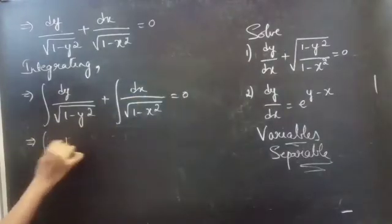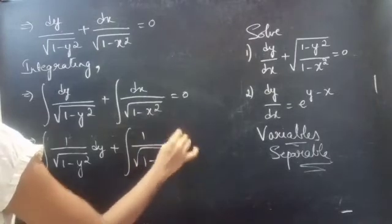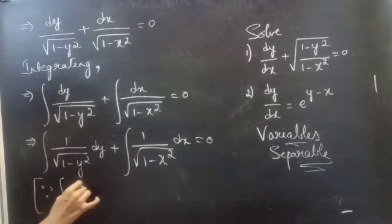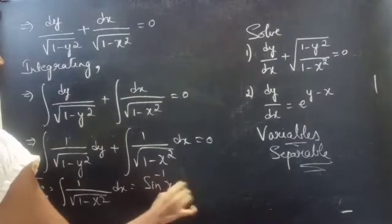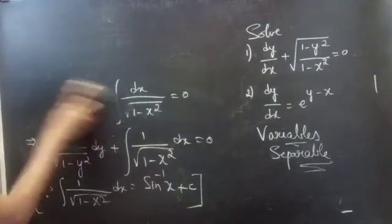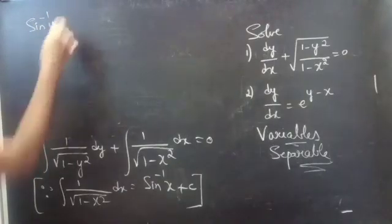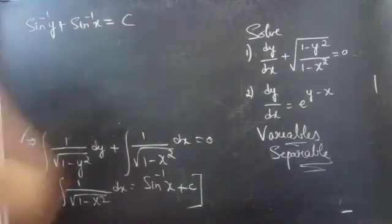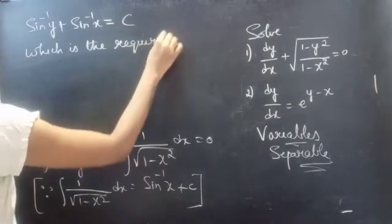Now integrating on both sides: integral of 1 over square root of (1 minus y squared) dy plus integral of 1 over square root of (1 minus x squared) dx equals to 0. Since we know that integral of 1 over square root of (1 minus x squared) dx equals sin inverse x plus c, this becomes sin inverse y plus sin inverse x equals c, which is the required solution.